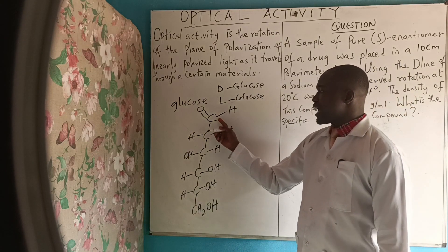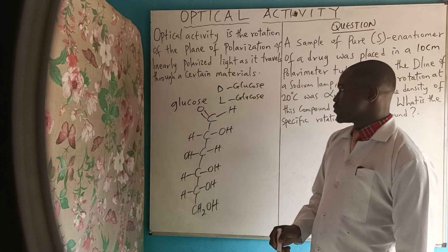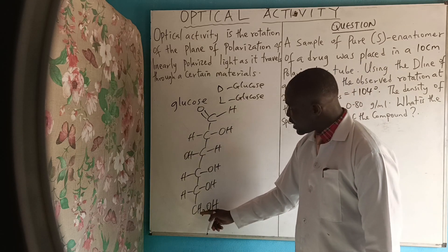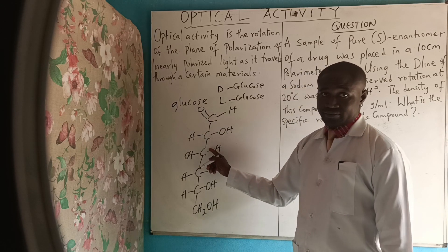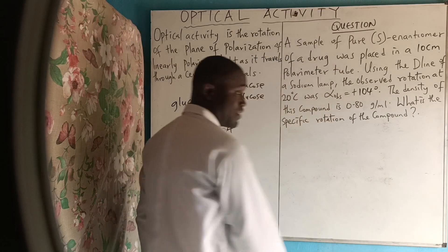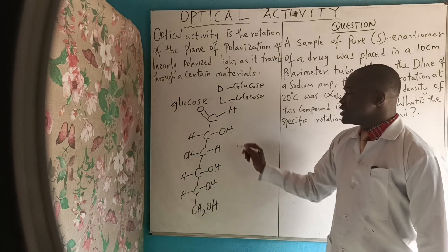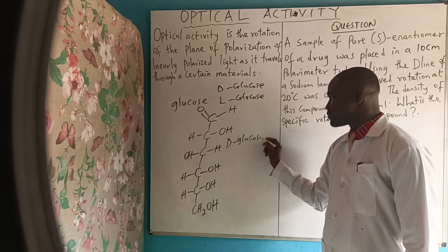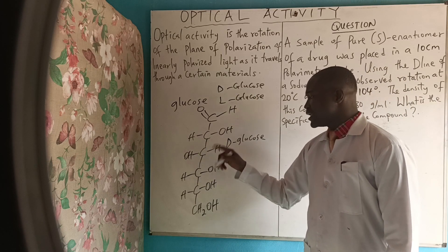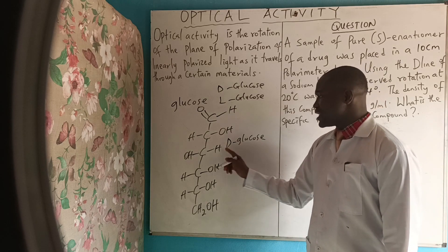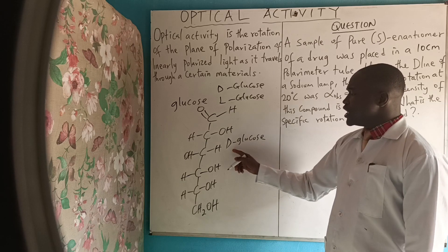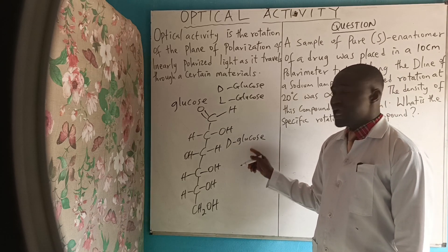Glucose has carbons one through six. We call it D-glucose because of what happens at carbon three. Starting from the aldehyde end, at carbon three you notice that hydrogen is on the right and the OH is on the left. That means this is called D-glucose. You call it L-glucose if the hydrogen and OH are interchanged — hydrogen goes left and OH comes right.